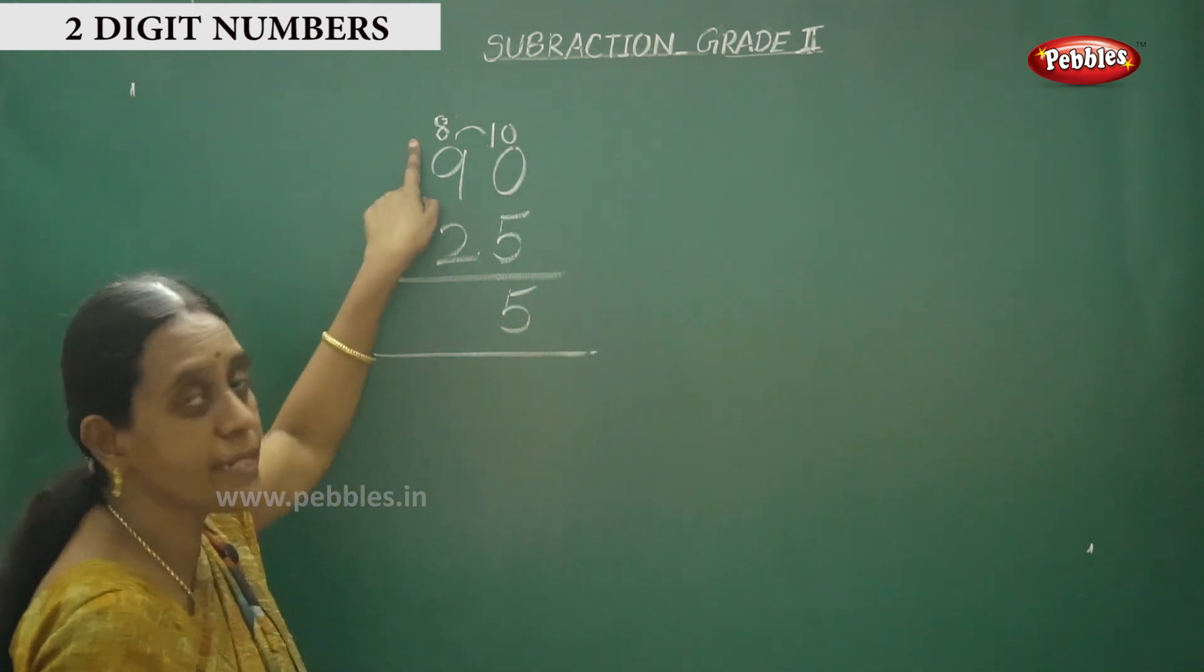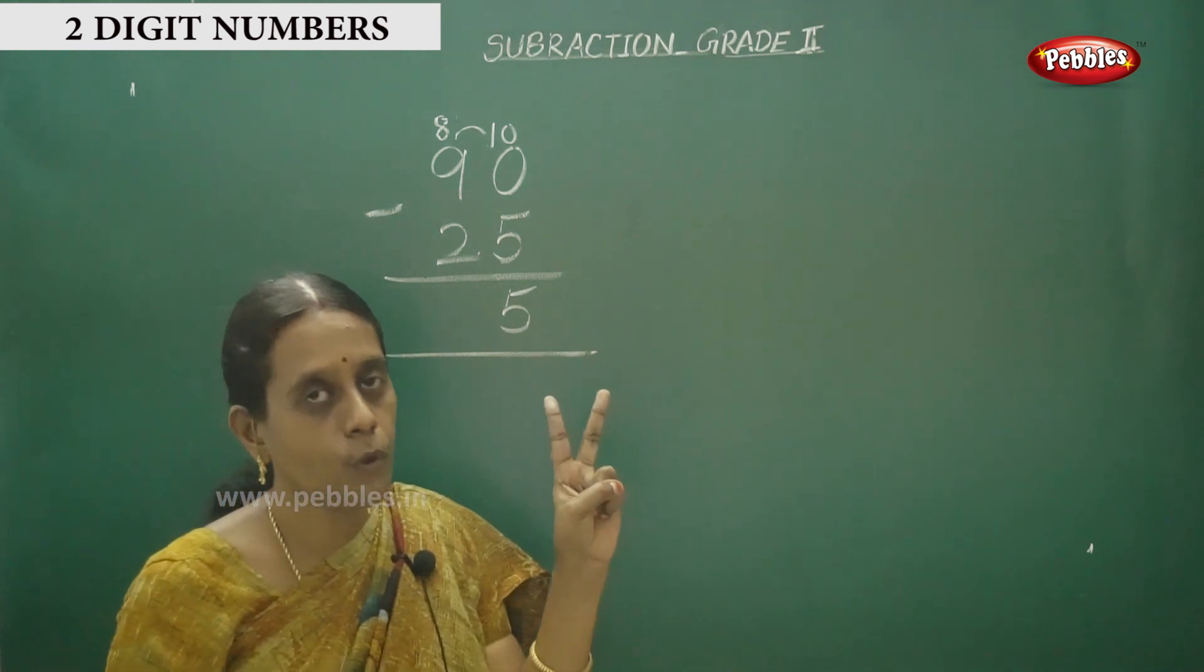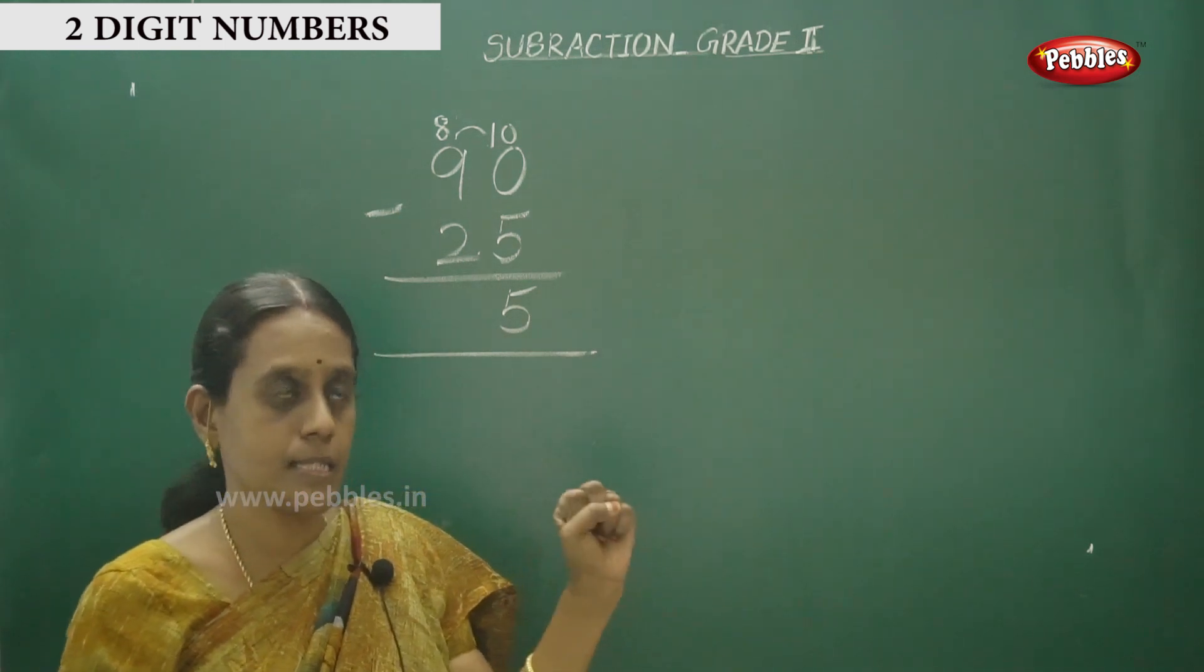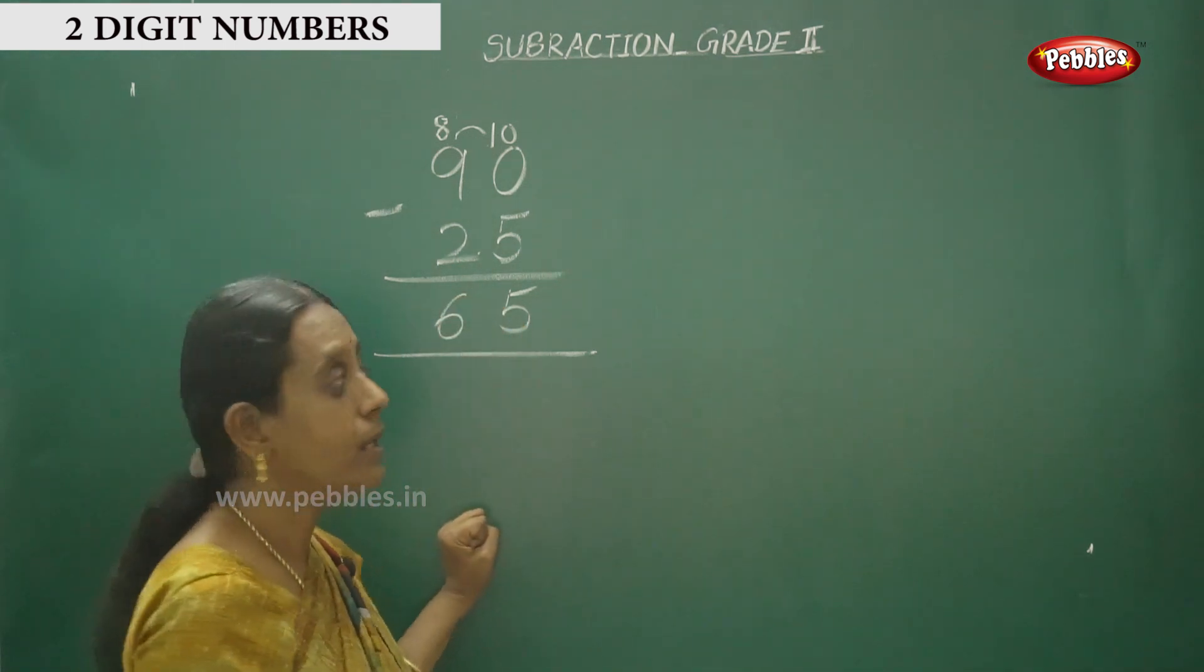And next, this is what? 8. So 8 in the mine, 2 in the finger. Before 8: 7, 6. So you have to put 6. Understand?